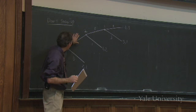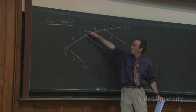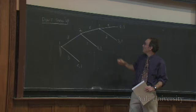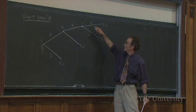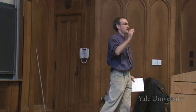This is a game in which player one has to choose between up and down. If player one chooses up, then player two gets to move and chooses between left and right. And if player two chooses left, then player one gets to move again and chooses between up or down.